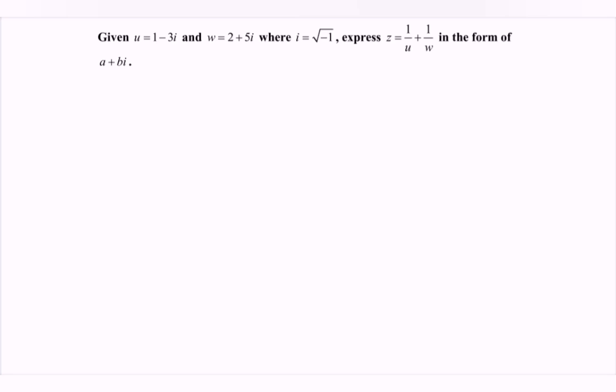Hello everyone, in this video I'm going to discuss an example for complex numbers. Given u equals 1 minus 3i and w equals 2 plus 5i, where i equals the square root of negative 1, express z in the form of a plus bi.